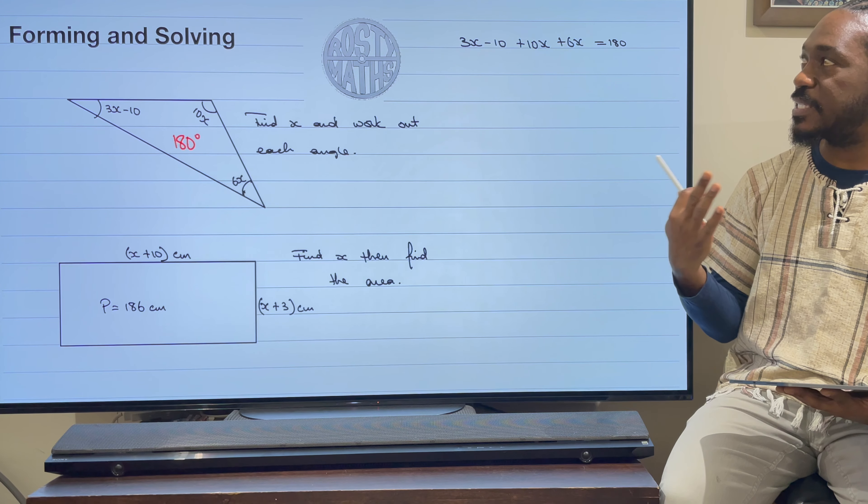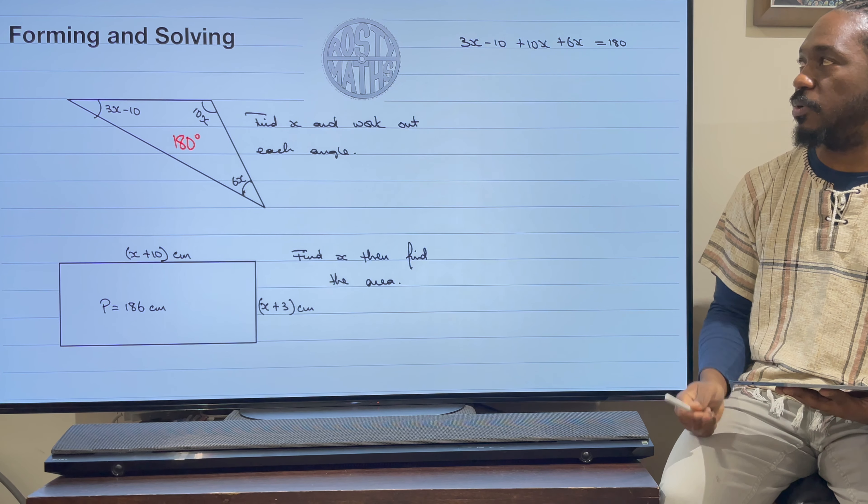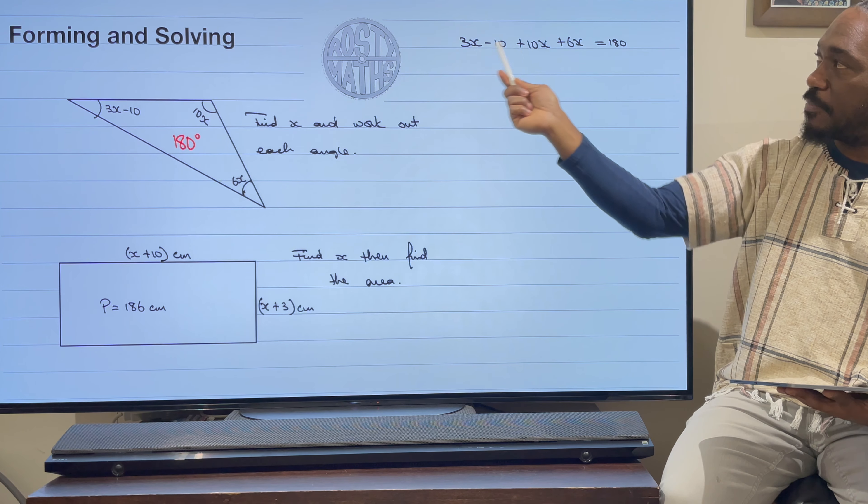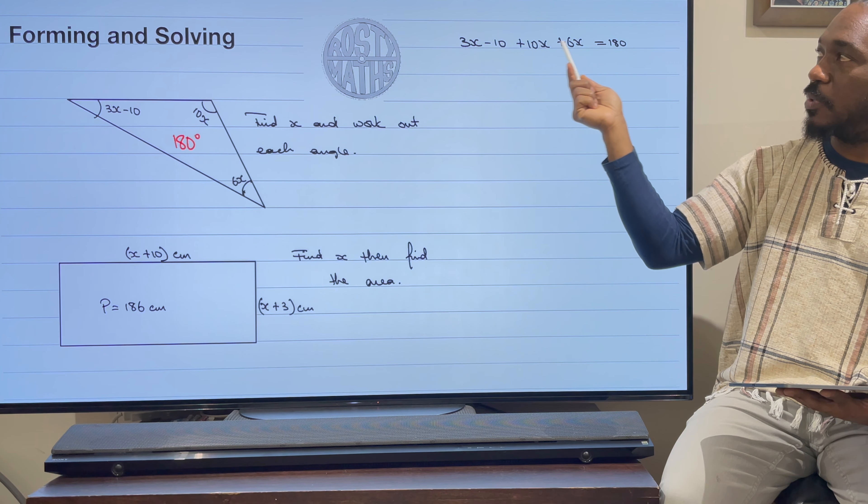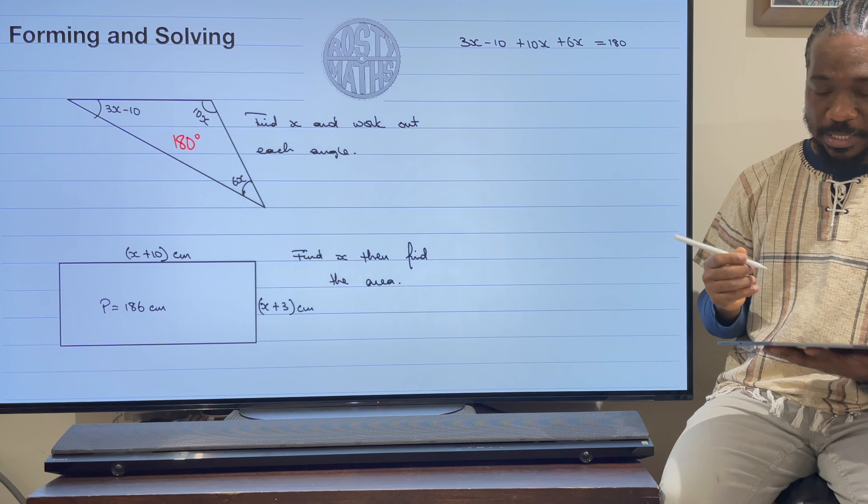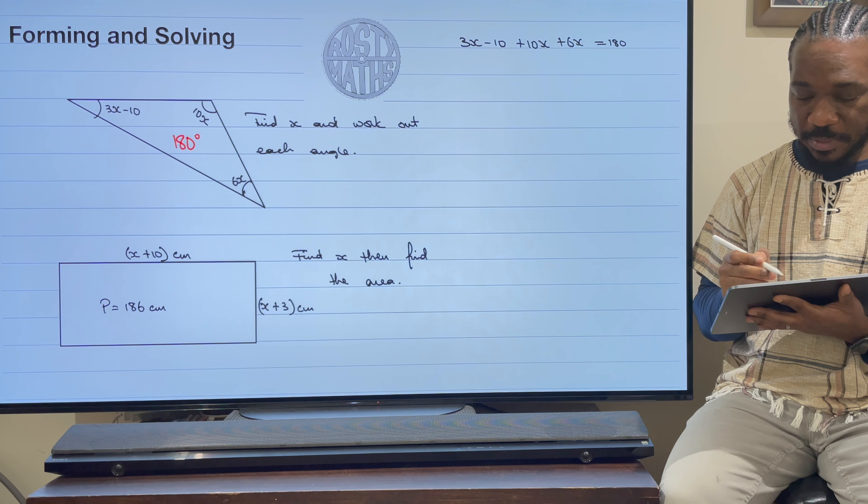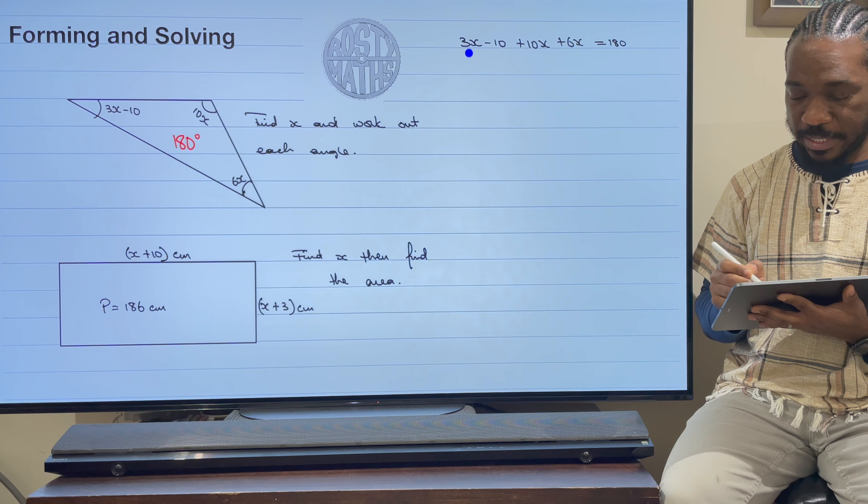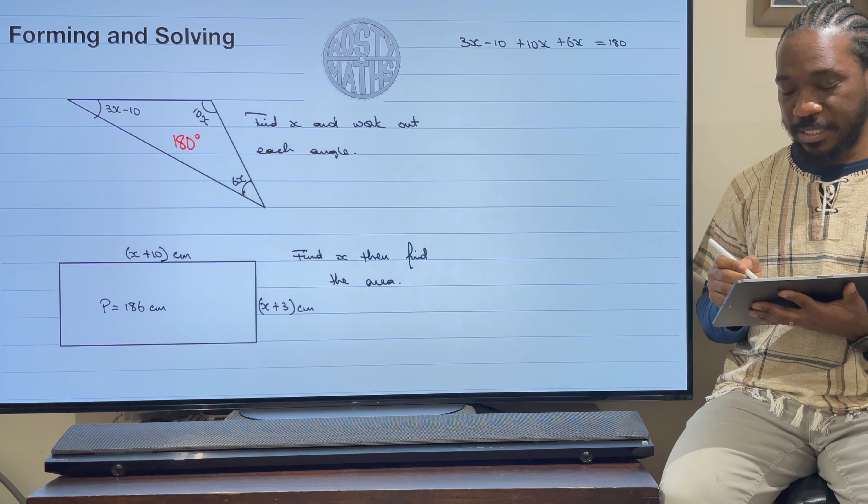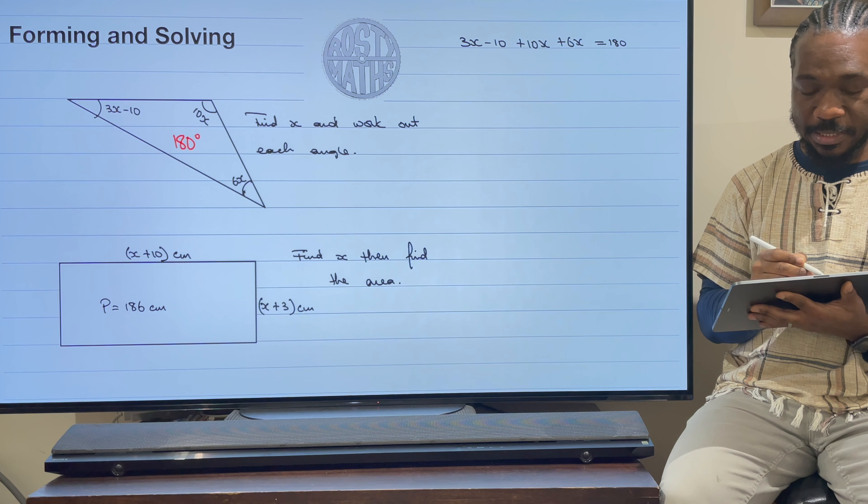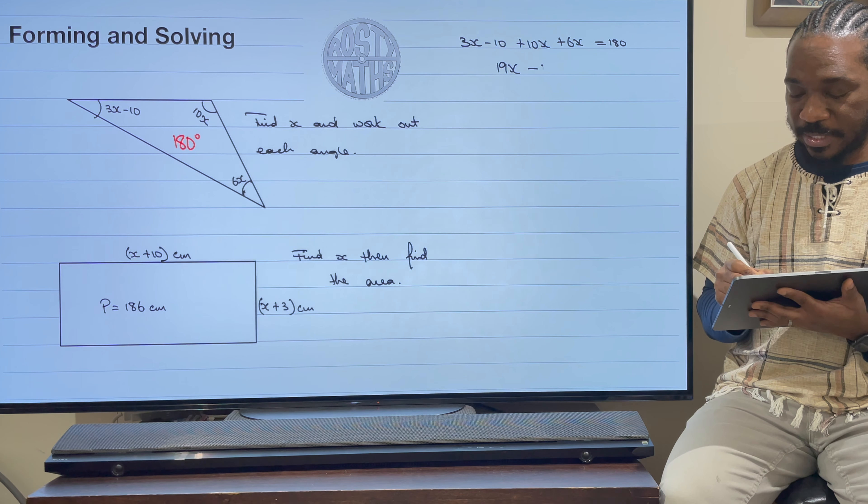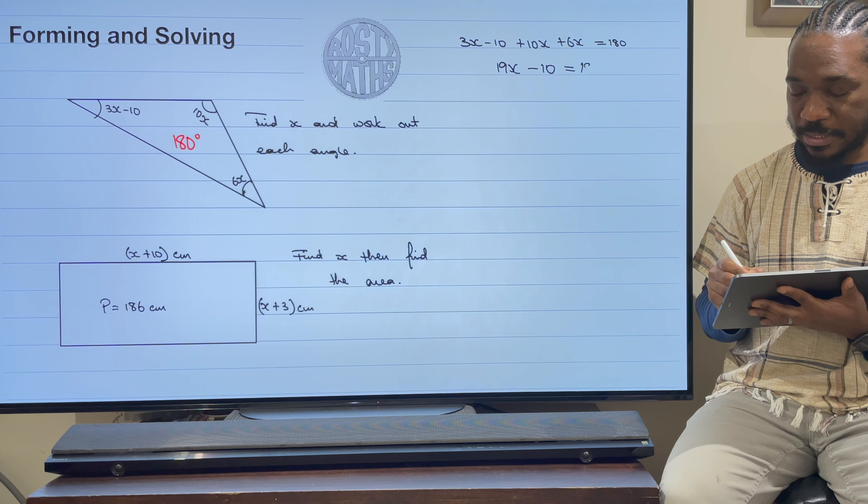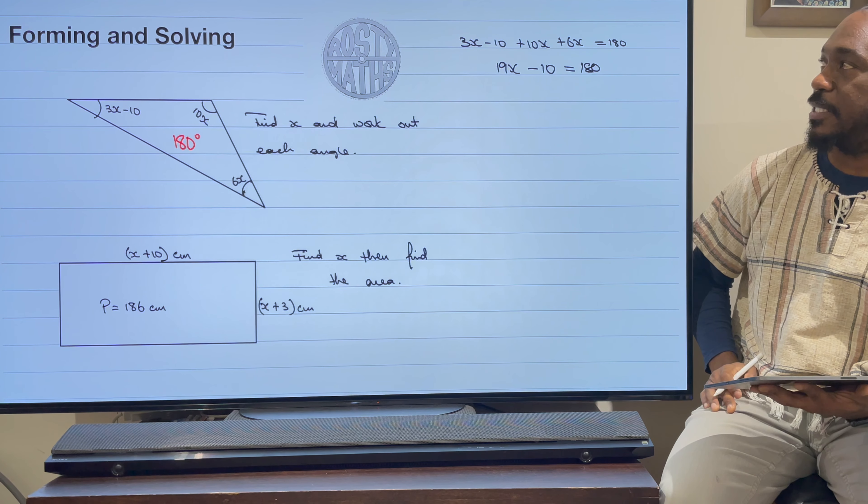Now let's simplify this equation and solve it. I can only add up the x's together and then the numbers separately. Let's add up all the x's together first. I have got 3x plus 10x is 13x, and then that other 6x there is going to be 19x. We have that take away 10, and that's equal to 180 degrees.